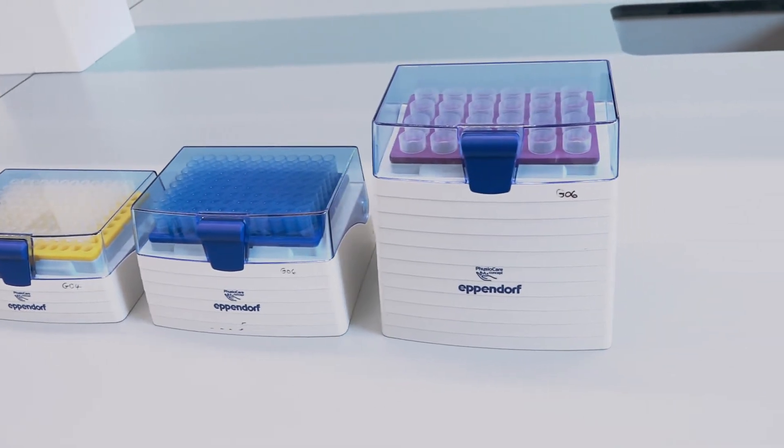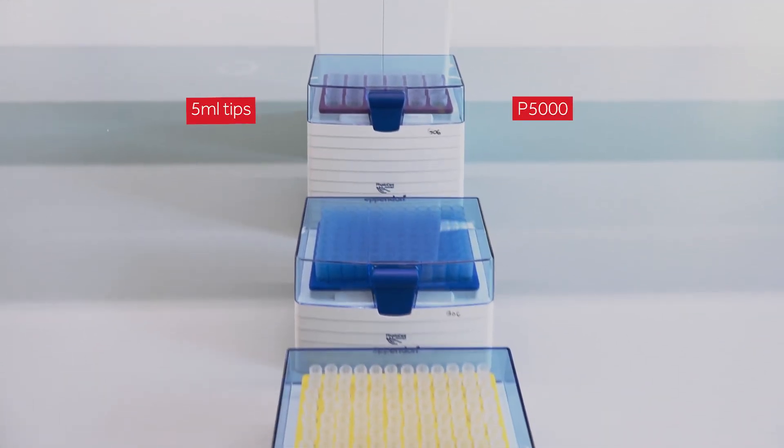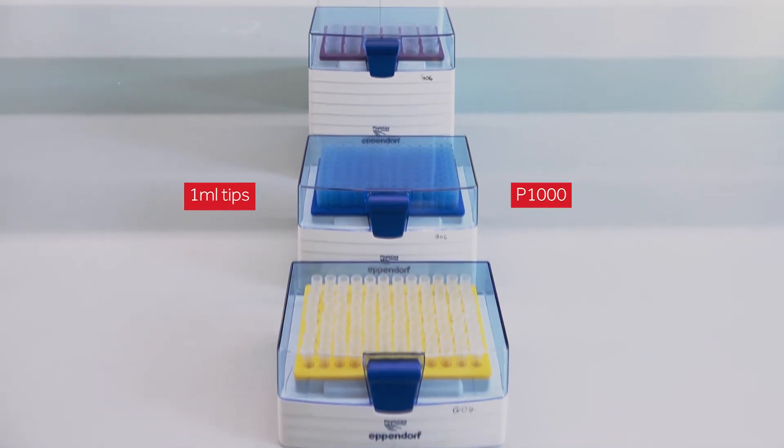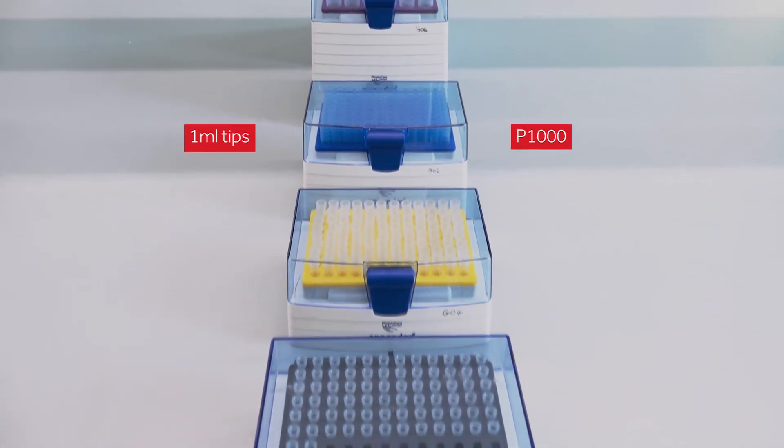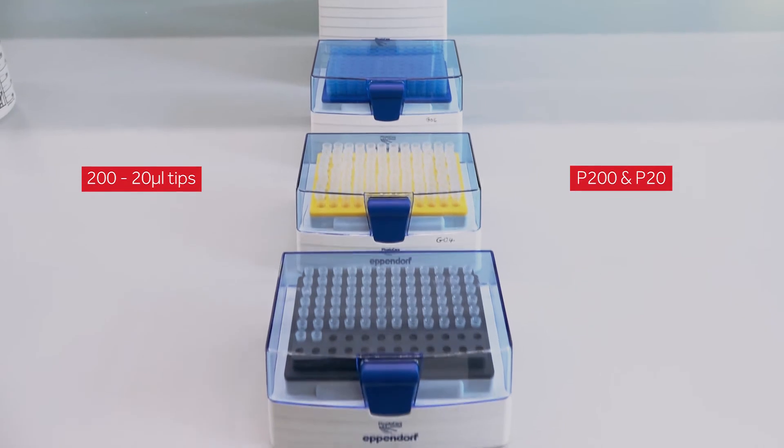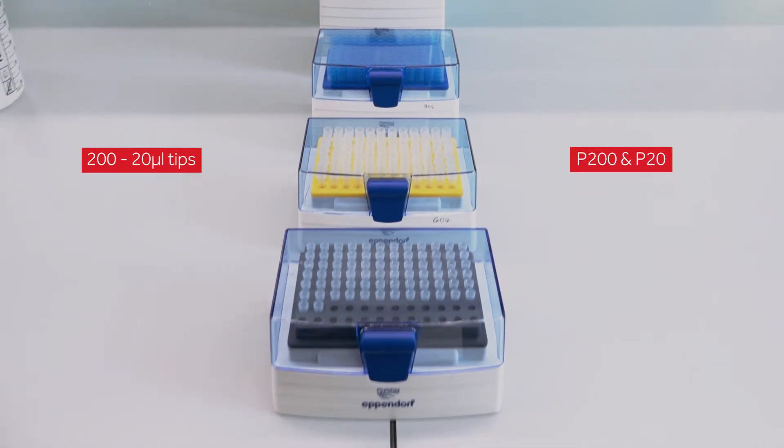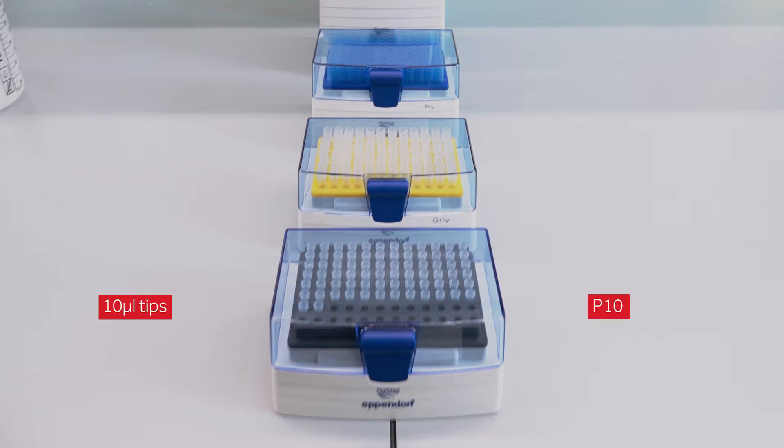Large 5mm tips are used with the P5000. 1mm tips are used with the P1000. 200 to 20 microliter tips are used for both the P200 and the P20. The smallest 10 microliter tips are used with the P10.